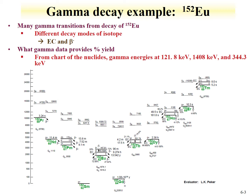With europium-152, there are many different types of gamma decays. If we look at europium-152, we see that it actually decays by electron capture and beta decay. There are also some metastable states and isomeric transitions. Let's focus on trying to evaluate the gamma decay from europium-152. It's complicated because there are two different routes: electron capture and beta decay.